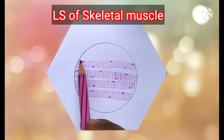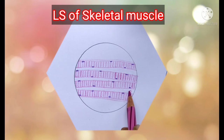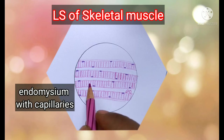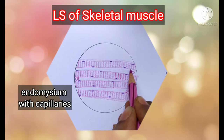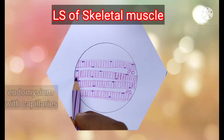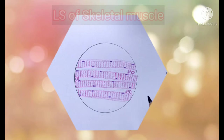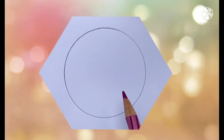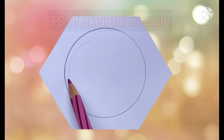Each muscle fiber is covered by a connective tissue sheath. The endomysium covers the individual muscle fiber along with small capillaries, and the perimysium covers the fascicle.